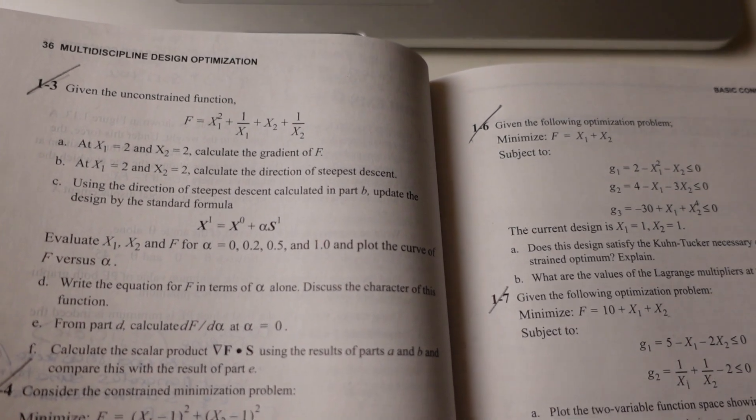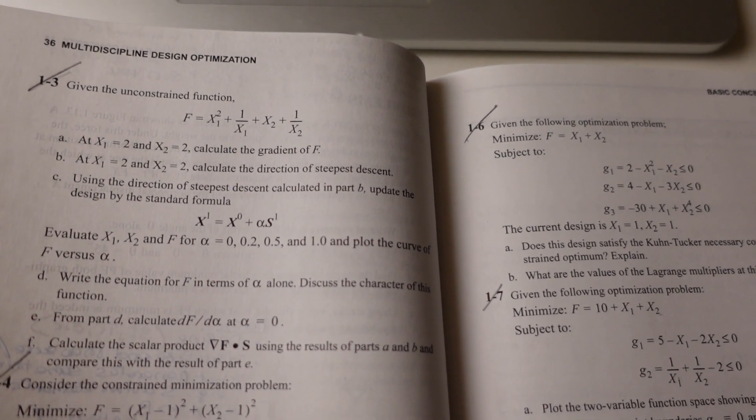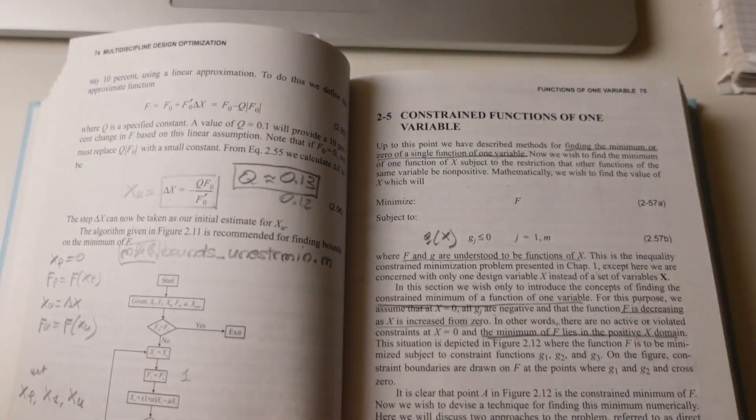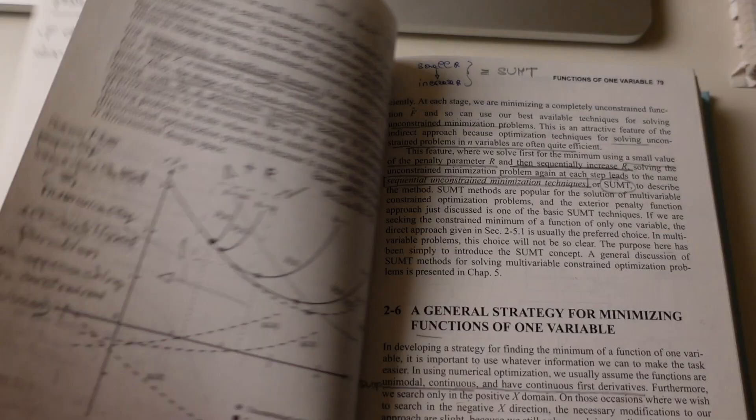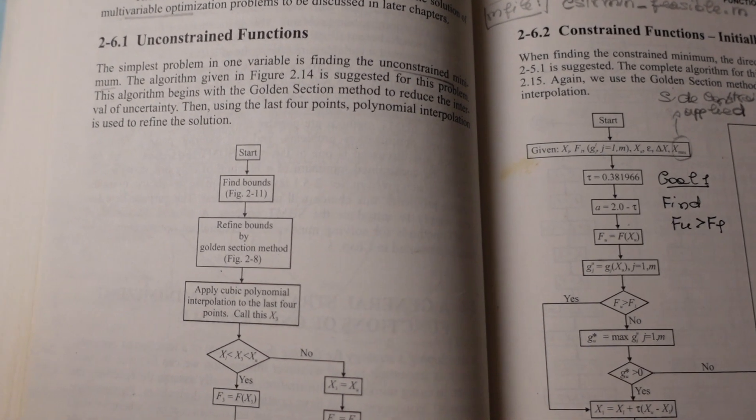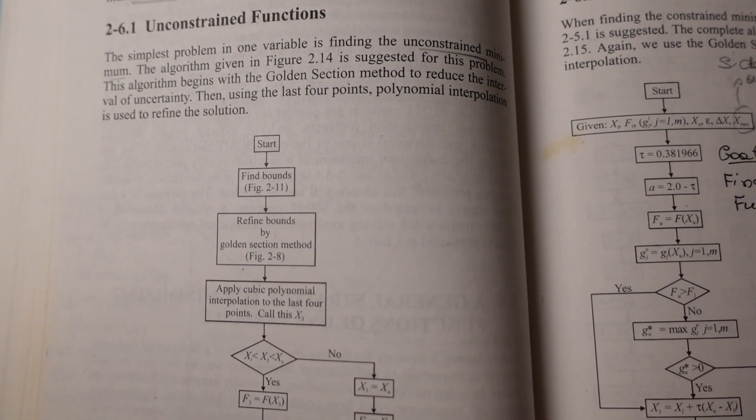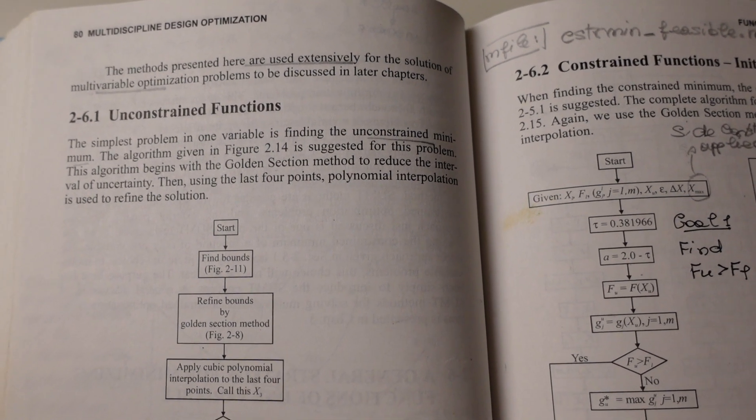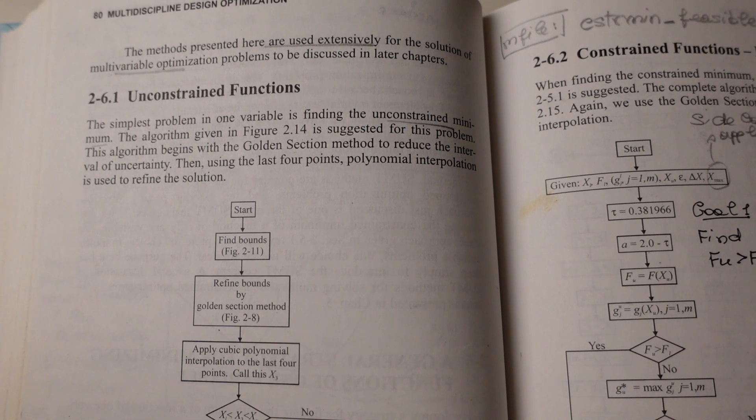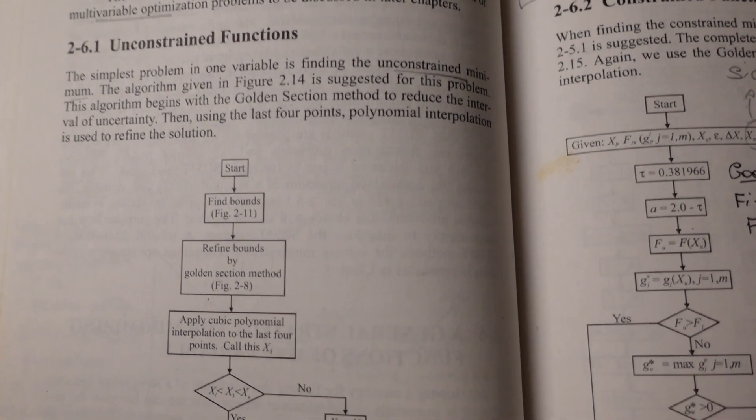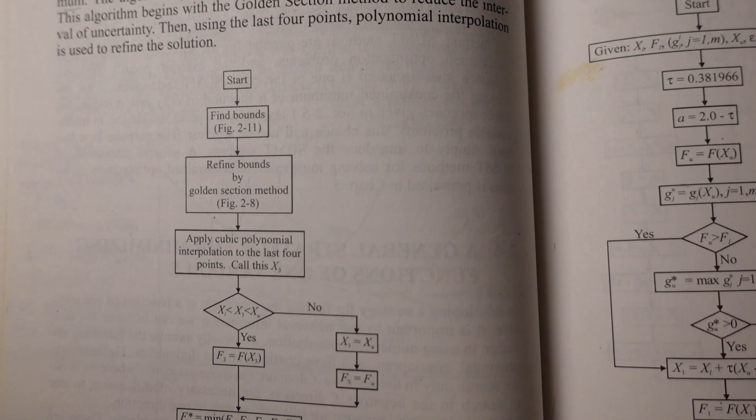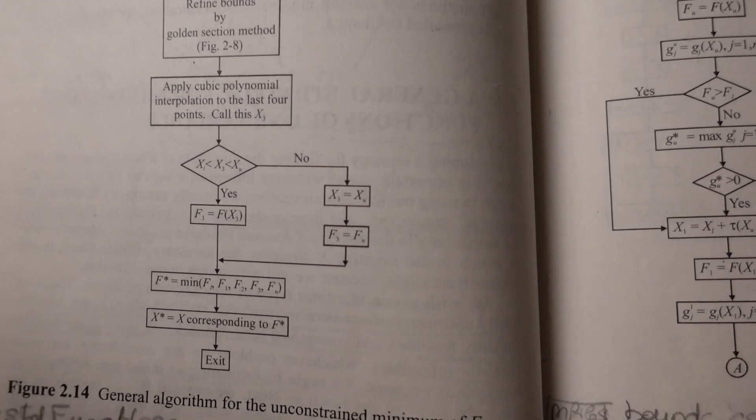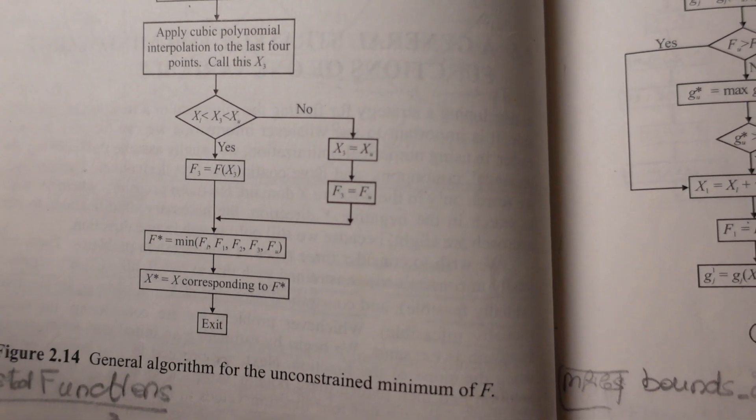Another important feature of the book is represented by the algorithms. For instance, let's give a look at this algorithm for unconstrained functions. So the simplest problem in one variable is finding the unconstrained minimum. How does he go about to find the unconstrained minimum? Well, it shows here in this algorithm: start, find bounds, refine bounds by golden section method, apply cubic polynomial interpolation to the last four points, et cetera.